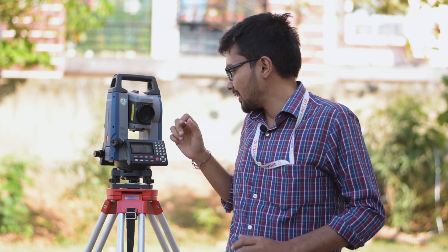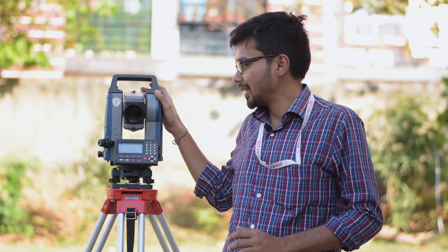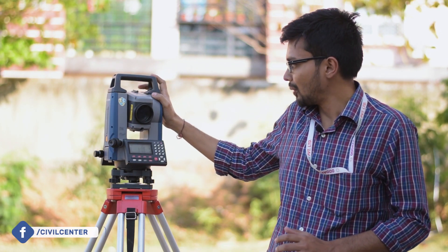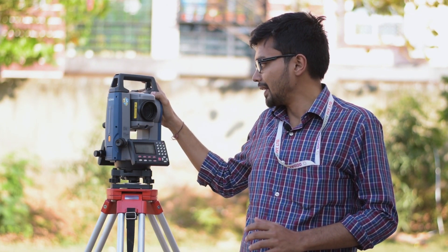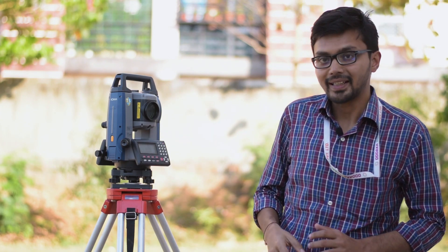As you saw in our earlier videos, a total station is basically a combination of EDM (Electronic Distance Measurement) and theodolite. It measures distances at high accuracy and we can get the XYZ coordinates of a point—that is, the easting, northing, and elevation. In this video tutorial series, we'll see how to operate a total station.